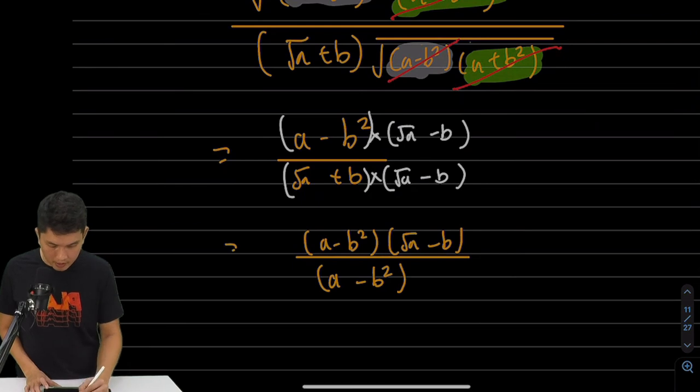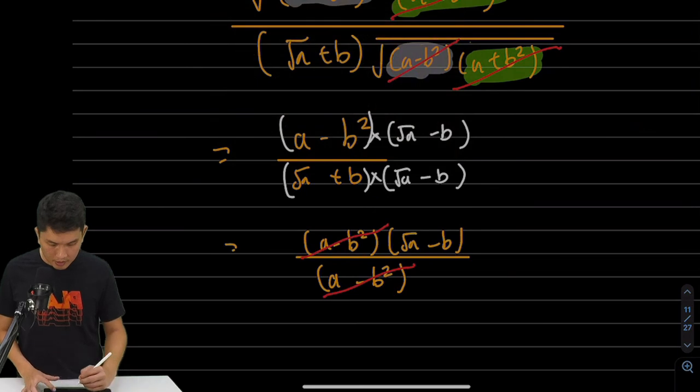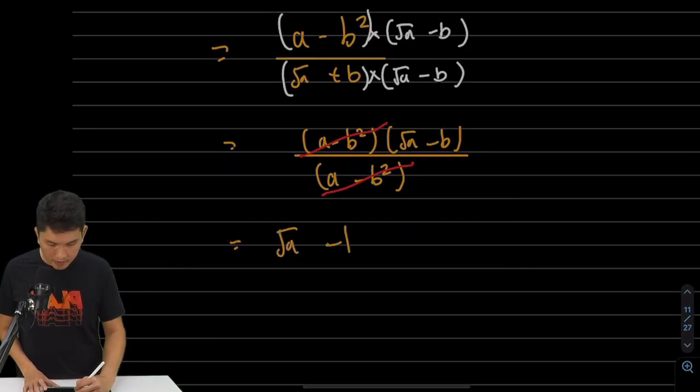So root A square is just A minus B square. Oh, look! I can make another cancellation. Cancel. Cancel. And then I'm just left with root A minus B.